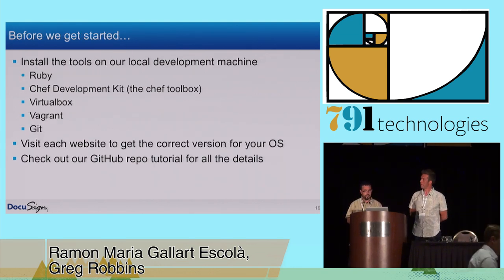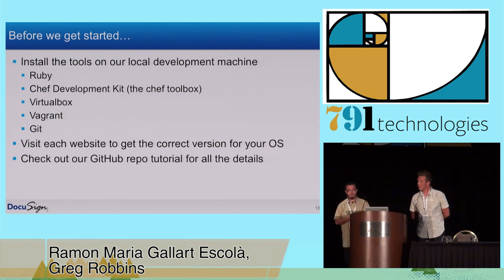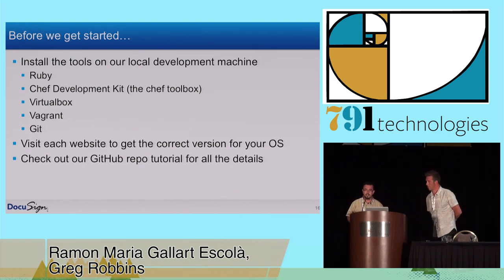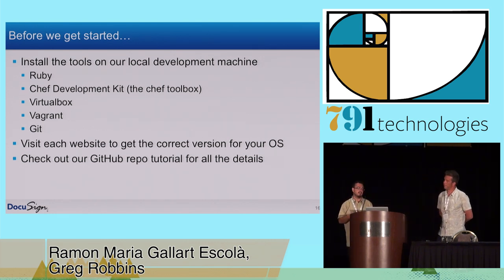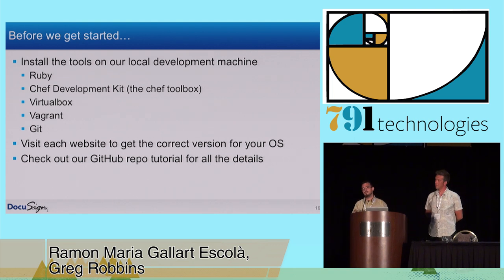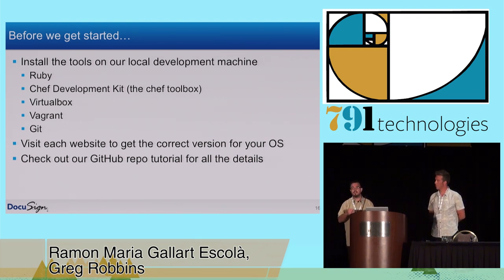So what do we need to do all of that? We need to have installed on our host machine: Ruby, the Chef Development Kit, VirtualBox, Vagrant, Git — all the tools that we have been talking about. You can find in the tutorial the links to those applications.